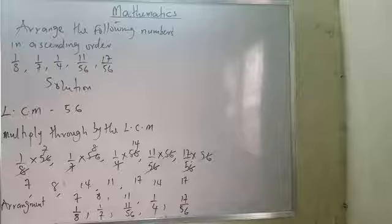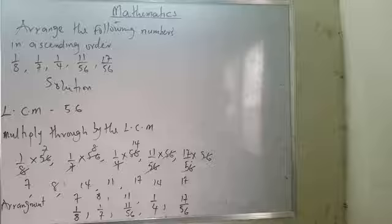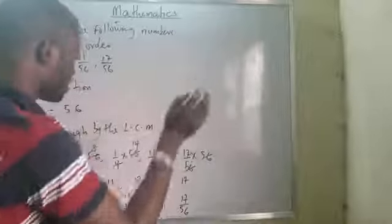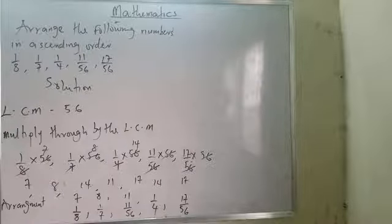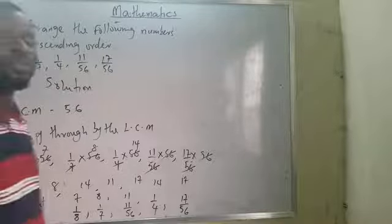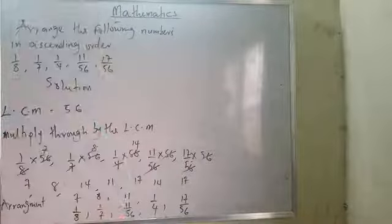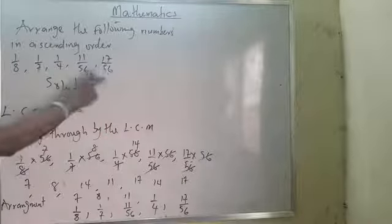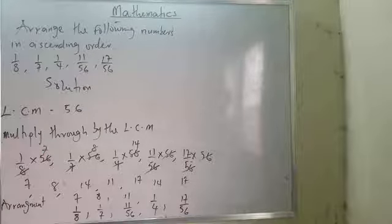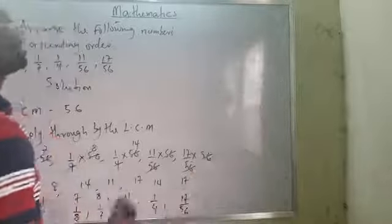If the question asks for descending order, you simply turn it upside down — reverse the arrangement. Ascending means increasing order. Descending means going from the largest down. That is all for this part.